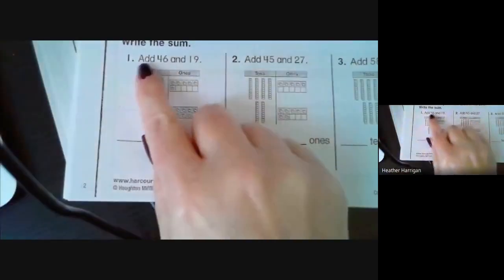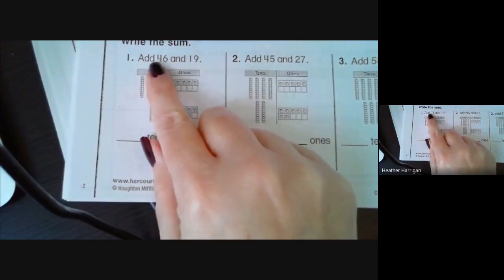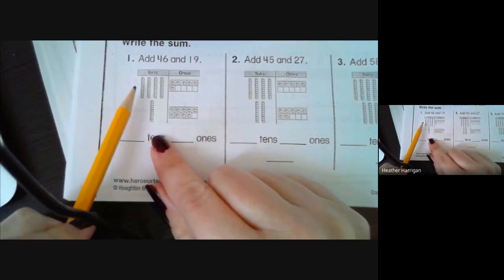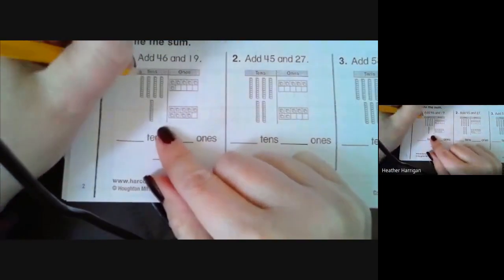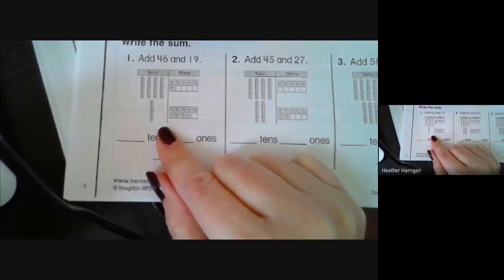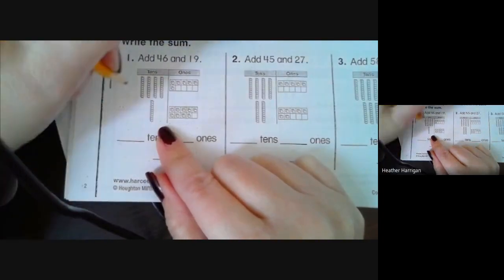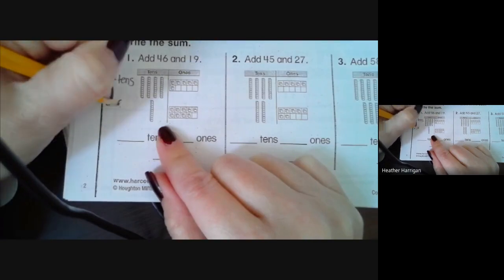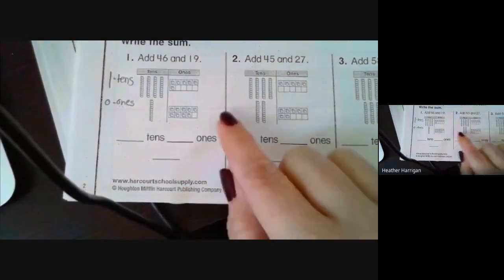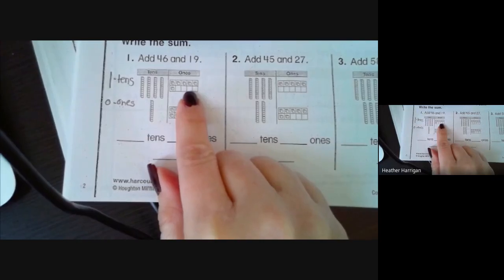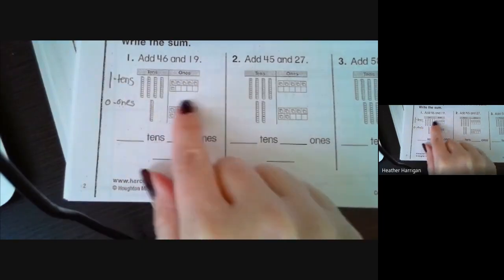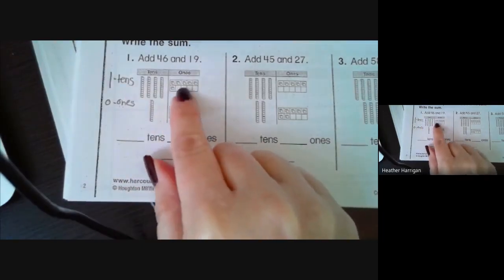So if I said I wanted to add 46 and 19, I would show 46 as four tens and six ones. A lot of times we will ask children to write quick pictures. We make a line to represent tens and we make a circle to represent ones. In this particular example, we're using what's called the ten frame. This is a good point of reference for the children because when they see that the ten frame is full, they know that this number is a ten.